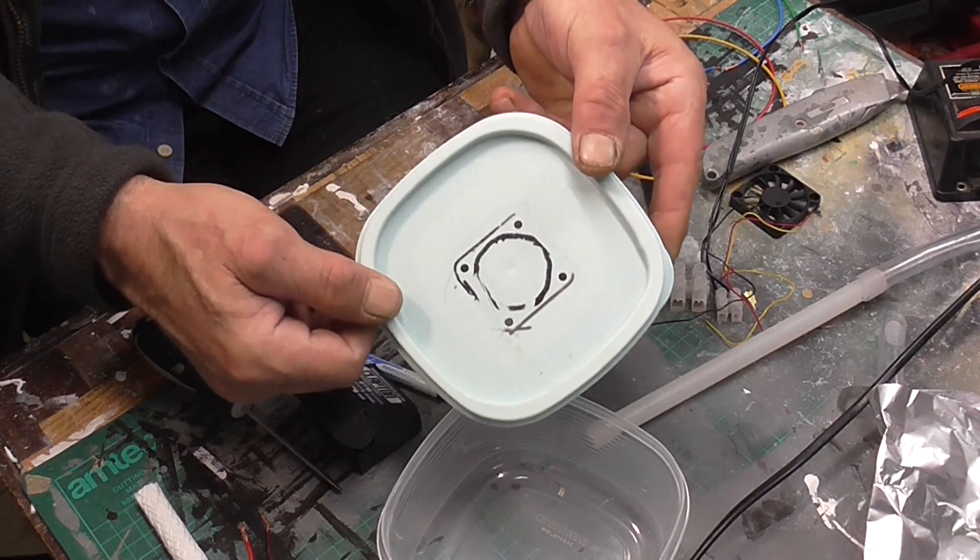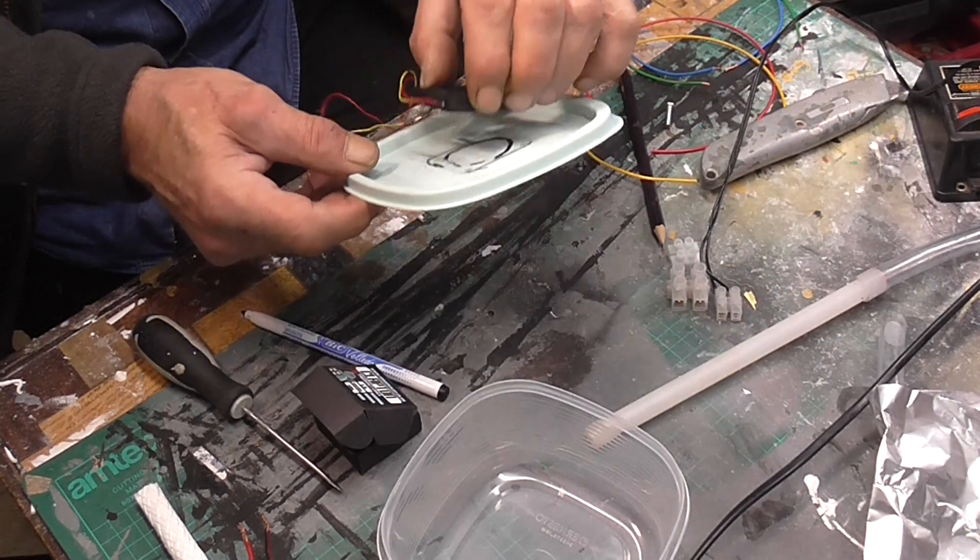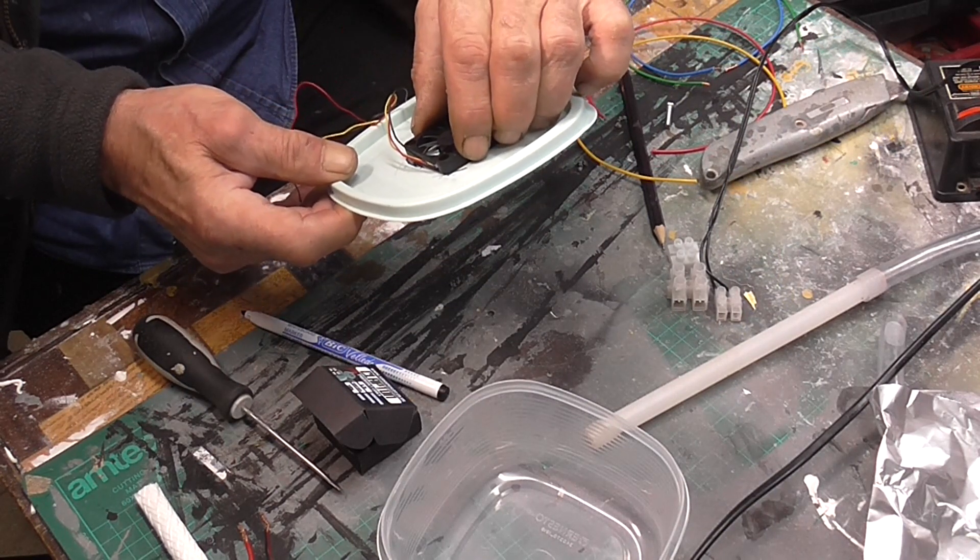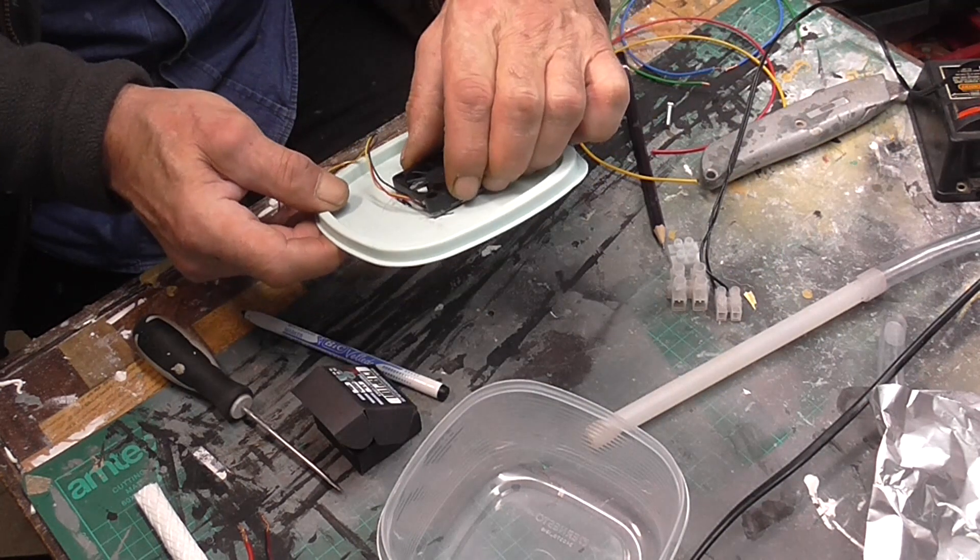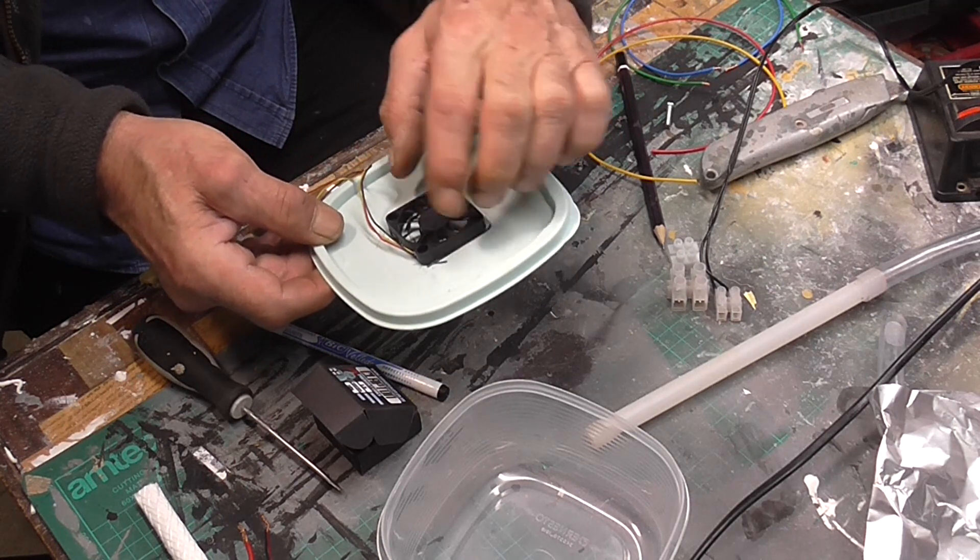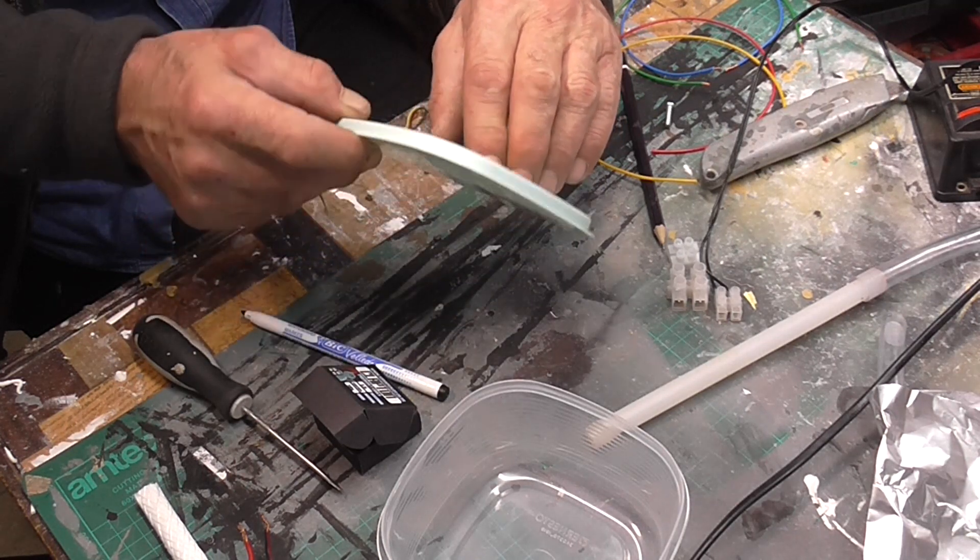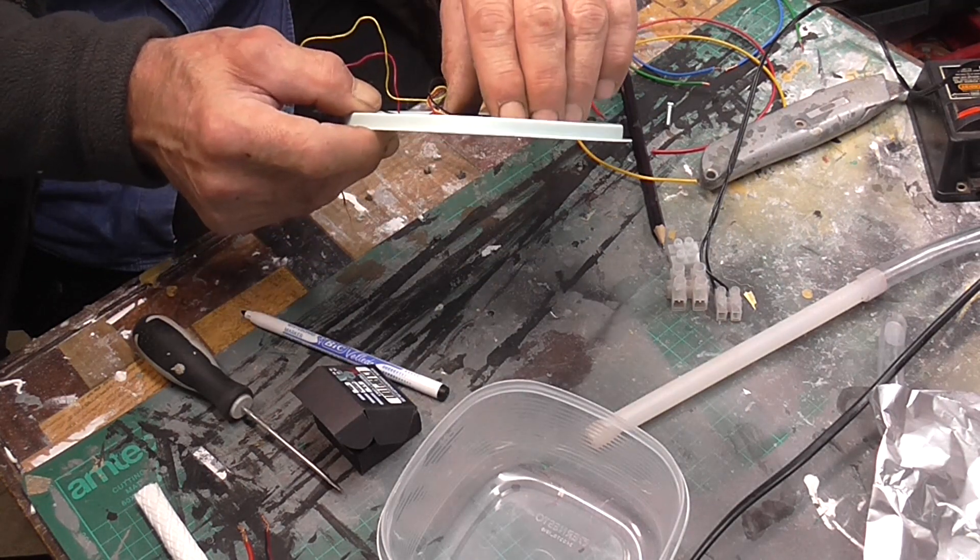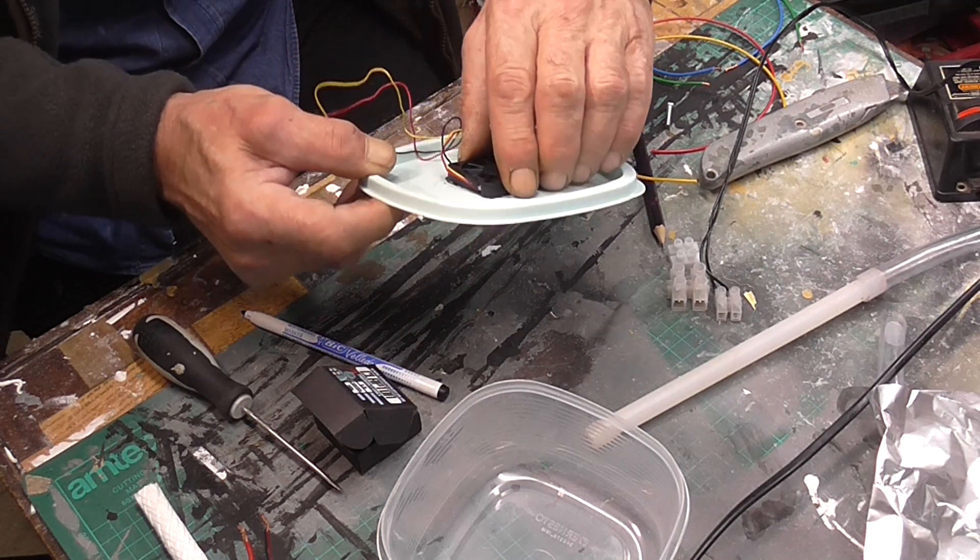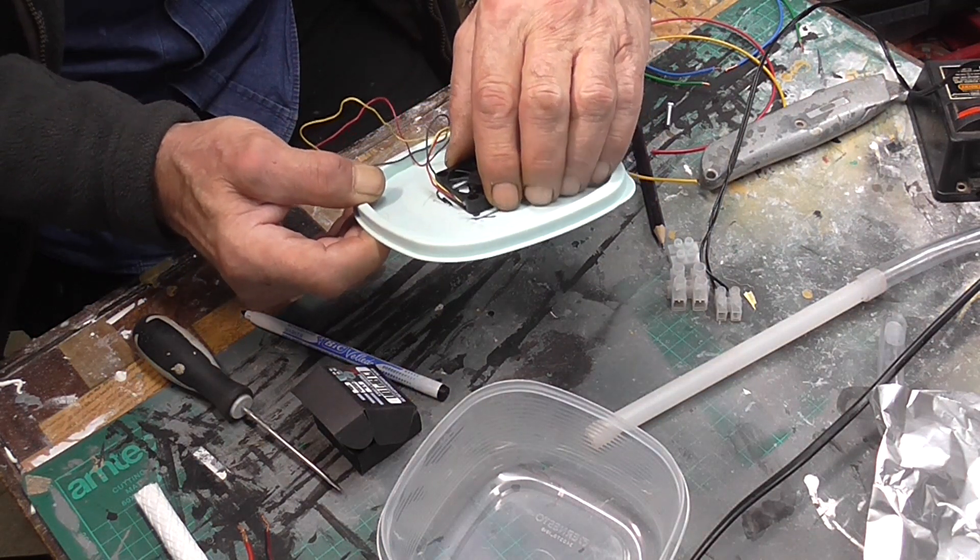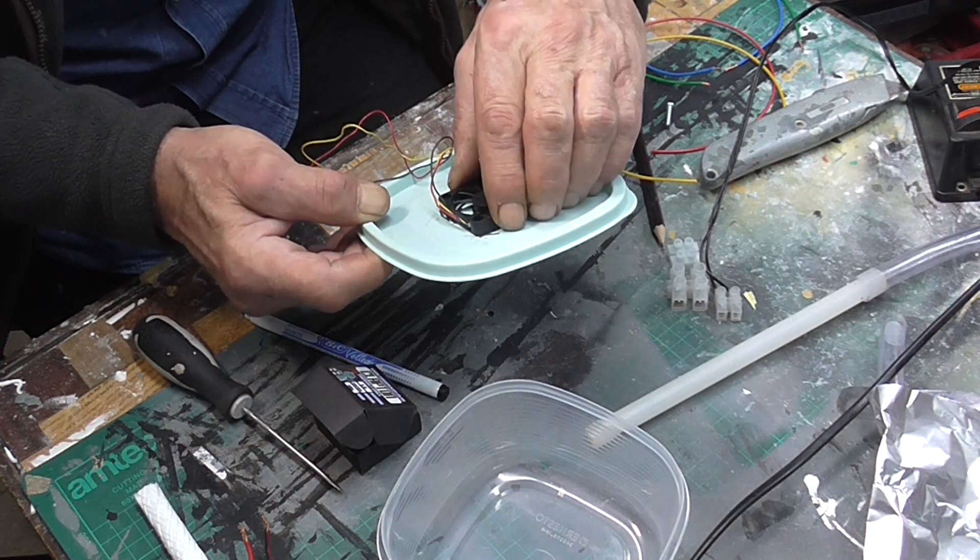Right, well I've marked out and drilled the holes and I'll bolt that on. Obviously you want to get as near to this ring as you can. I will seal it all around with hot glue, but I'll bolt that down, cut the hole out and bolt it down anyway.